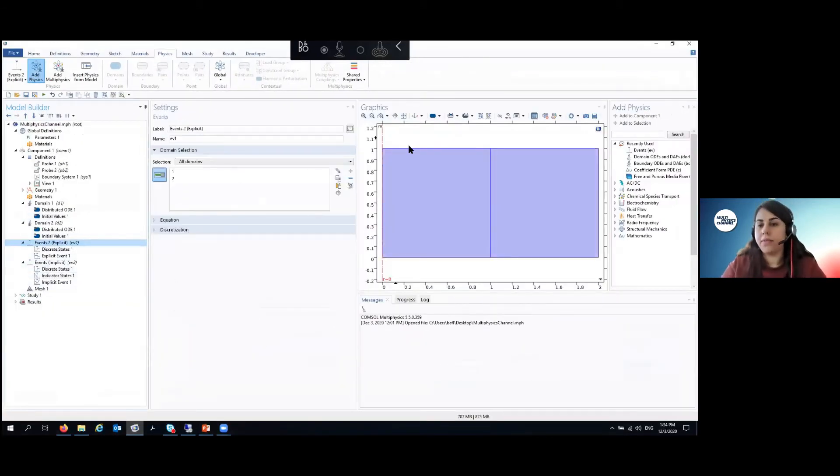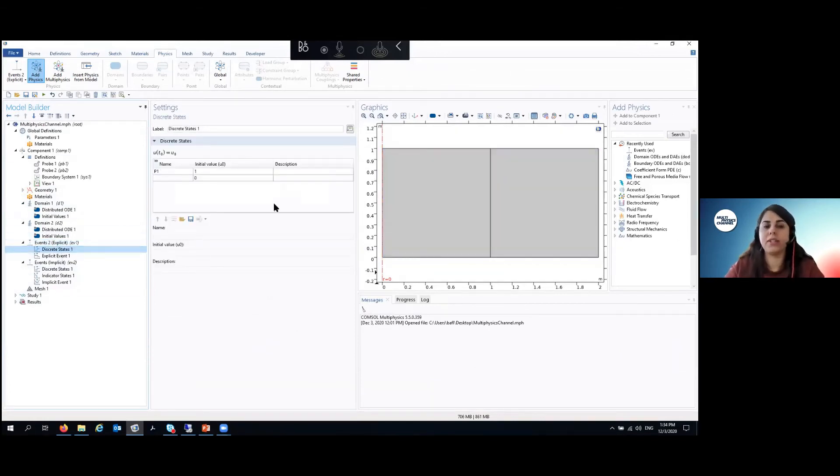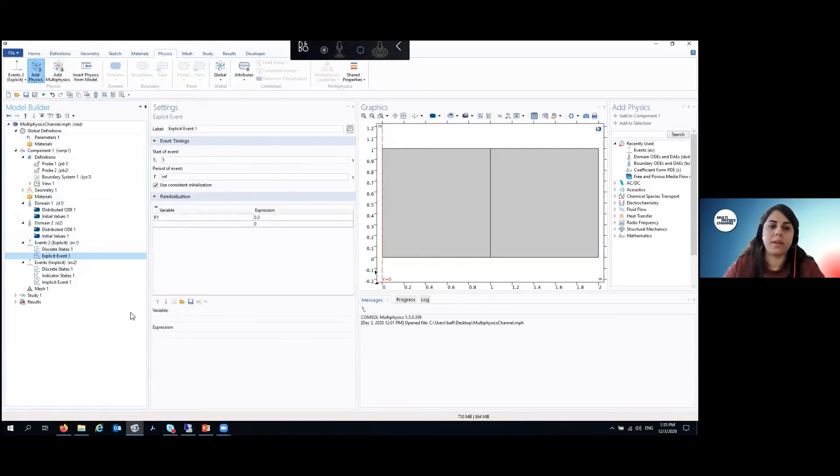So let's go to COMSOL. As you see here, we choose the domain that we want. I have two domains here with two physics in my model. I choose these two. This is the discrete state which I told you. It's the initial value. Then I put my explicit events here. And as I said, I can change it to other values.